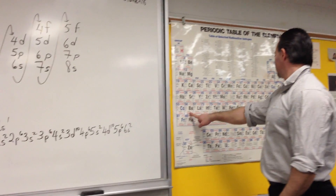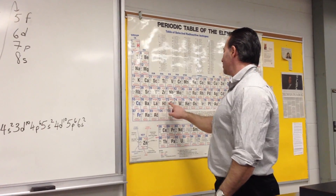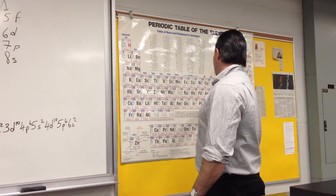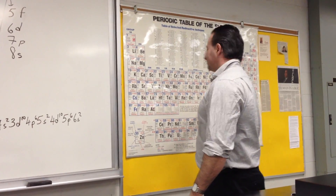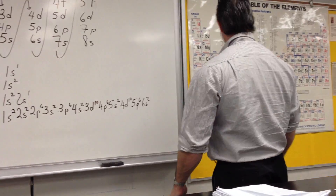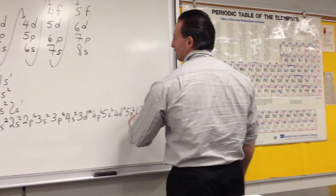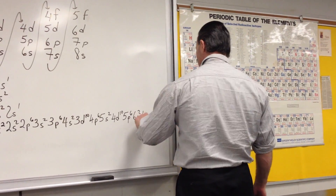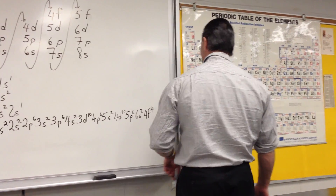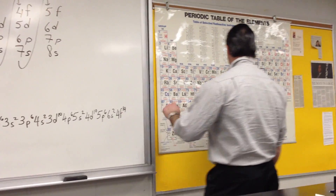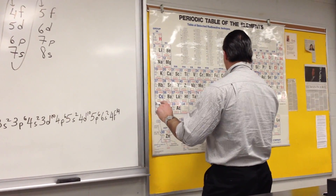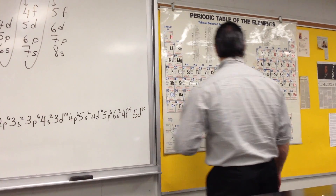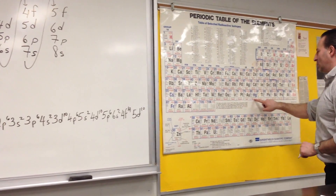We have to put in 10 more electrons. So after 6s2, we would have 4f14, and then traversing part of the D block up to 10 electrons, 5d10, right at the end of the D block. That's why we have 10 electrons at the end of it.